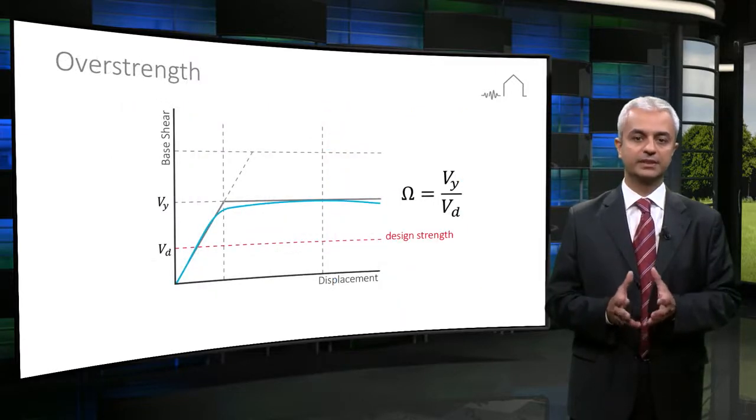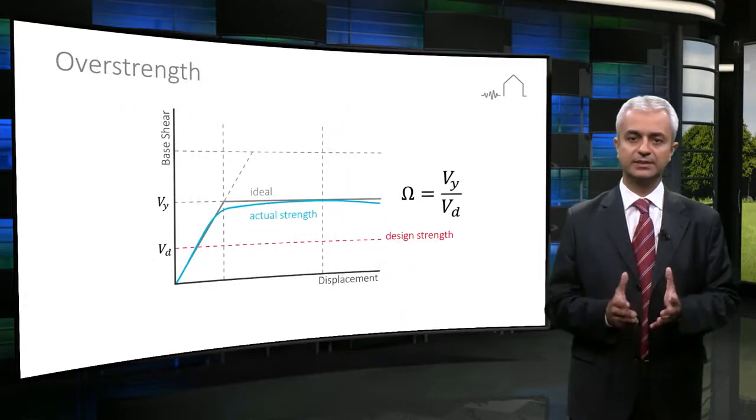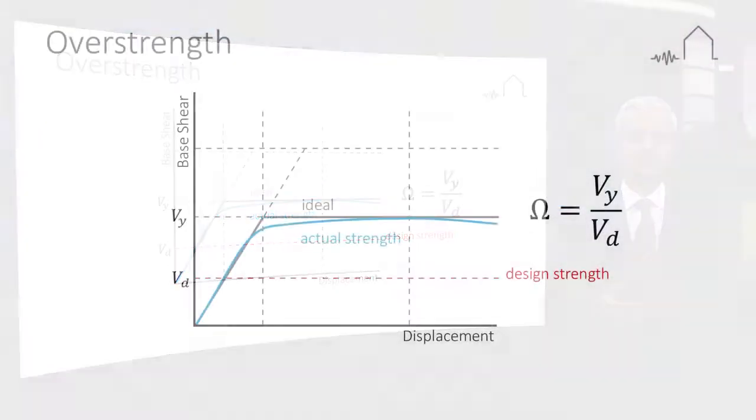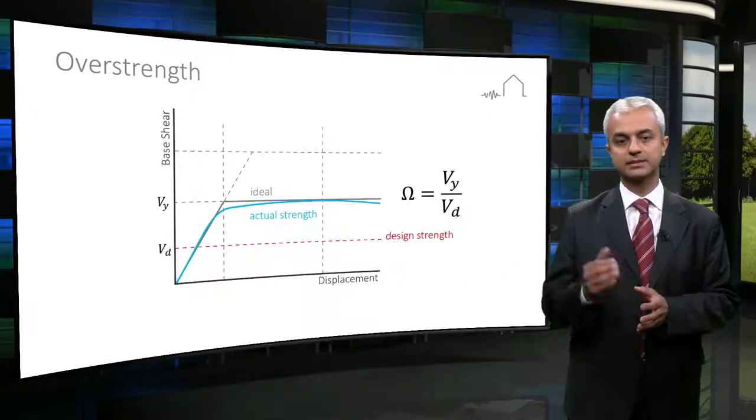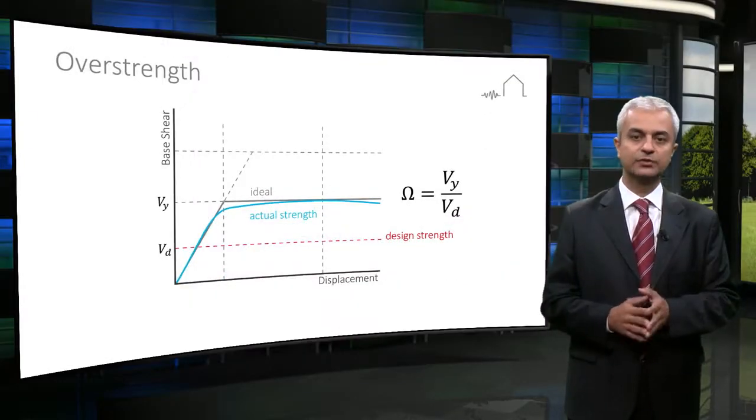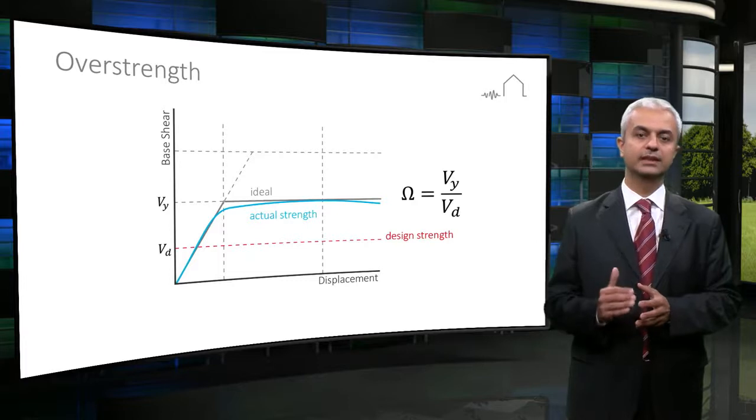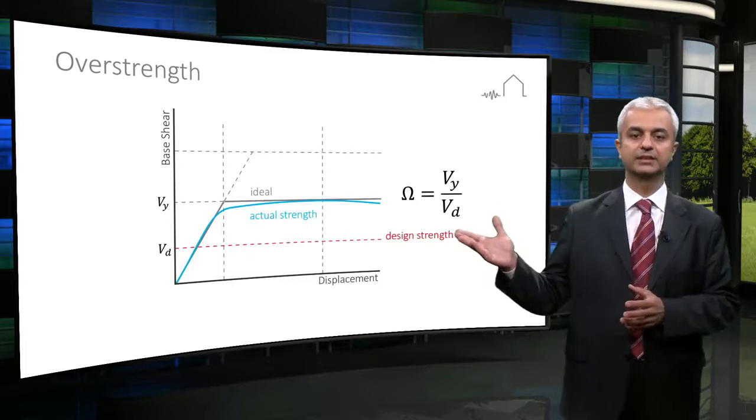Overstrength is another key parameter in seismic design. It is a parameter to define the difference between the actual and required strength of a member, system, or material. The design strength of a member is generally lower than its actual strength, as can be seen in the graph.